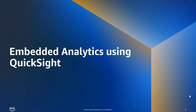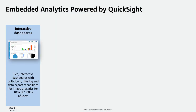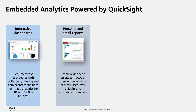Now let's look at what embedded analytics using QuickSight means. You can embed rich interactive dashboards you have created inside your applications for hundreds and thousands of your users. They can use these dashboards to drill down, filter, or even do data export — all within your application — providing a seamless experience without users having to leave. You can also continue that seamless experience through personalized custom-branded email reports, matched to your branding and colors.